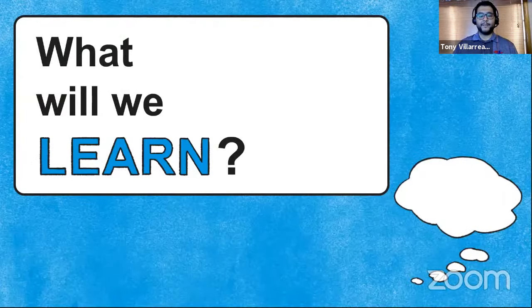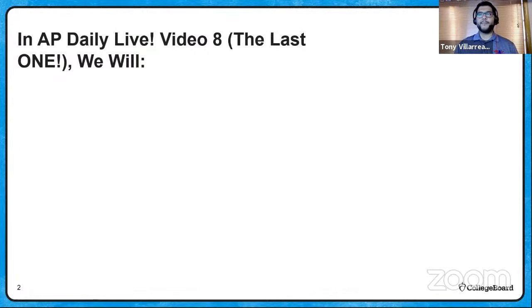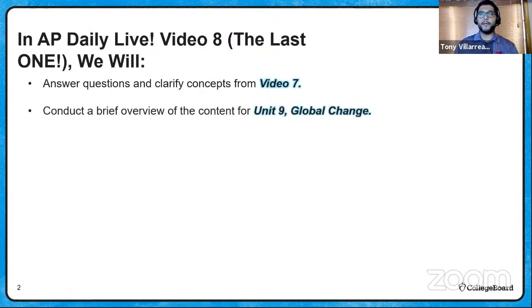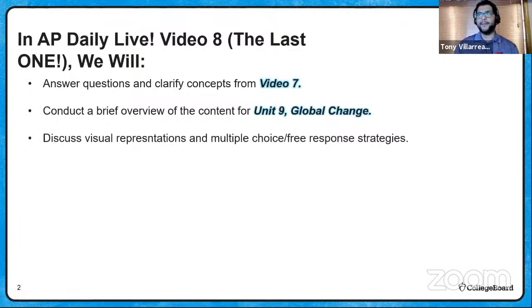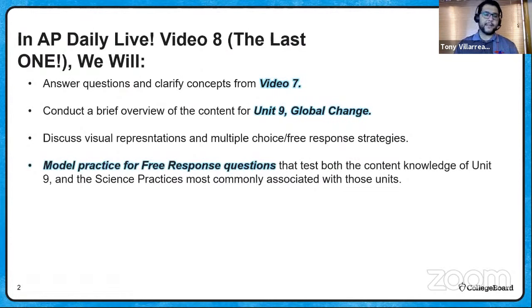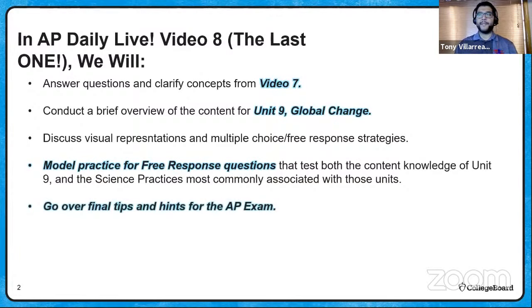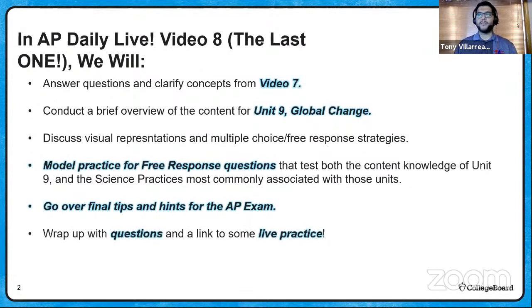Let's go ahead and jump into this last presentation. Today in video eight, we're using this time to answer and clarify final questions and concepts from video seven. We're going to do a brief overview of unit nine for global change, discuss visual representations, multiple choice and free response strategies, model another free response question, go over final tips and hints for the AP test, and wrap up with live practice questions.